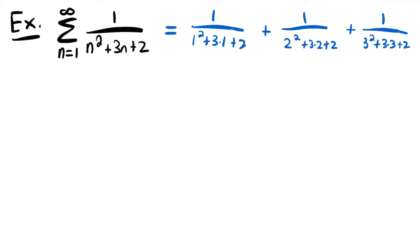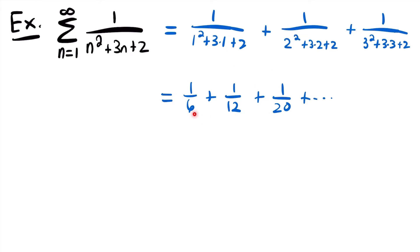When n equals 1 we get 1 sixth, when n equals 2 we get 1 twelfth, and when n equals 3 we get 1 twentieth. Looking at these terms, it doesn't really seem like we have a telescoping series — there are no collapsing terms. As we plug in more values of n, we continue to get positive fractions, and it would seem that nothing is going to cancel out.